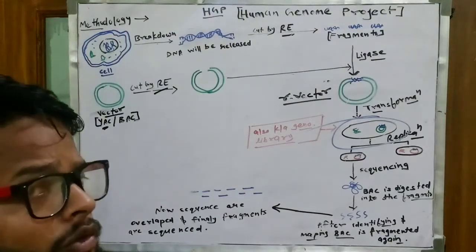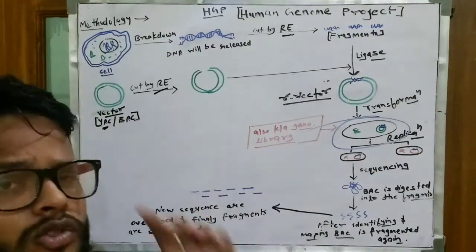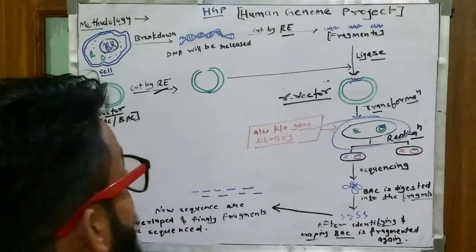Now we will take one chromosome. Inside one chromosome there is DNA. Inside DNA there is a gene. Inside genes there are so many base pairs of nucleotides. We have to sequence these nucleotides.